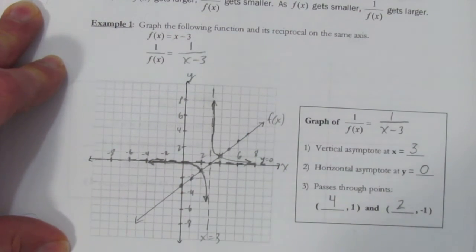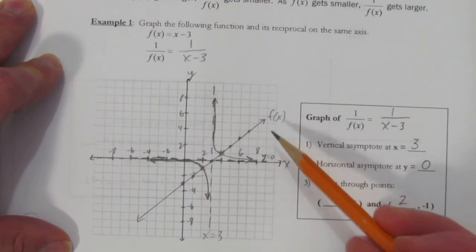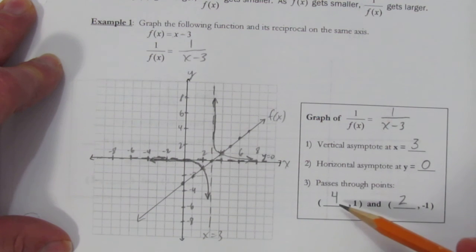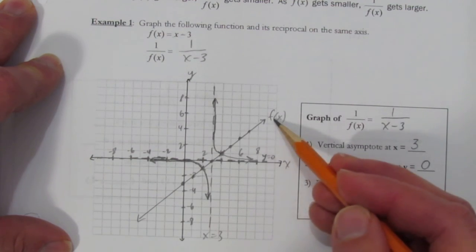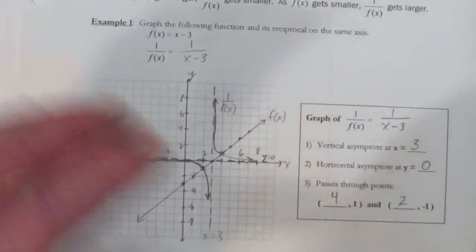And there we have it - the graph of our reciprocal function. We got that graph by finding the vertical and horizontal asymptotes and drawing the original so we can see where its shared points of y equals 1 and y equals negative 1 are. Don't forget to label your original equation and your reciprocal. And that's a graph.